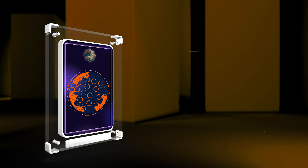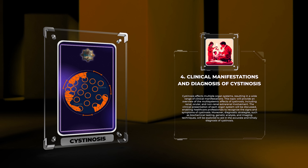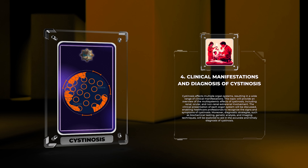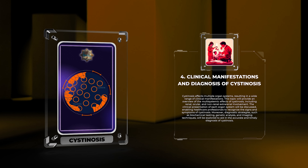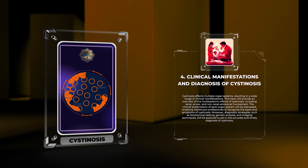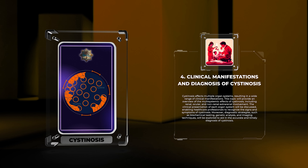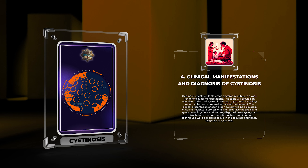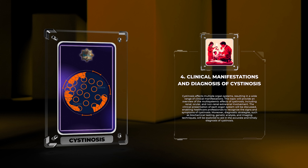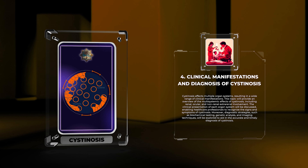Cystenosis affects multiple organ systems, resulting in a wide range of clinical manifestations. This topic will provide an overview of the multisystemic effects of Cystenosis, including renal, ocular, and non-renal extrarenal involvement. The clinical presentation of each organ system will be discussed, enabling healthcare professionals to recognize the signs and symptoms of Cystenosis. Moreover, diagnostic strategies such as biochemical testing, genetic analysis, and imaging techniques will be explored to aid in accurate and timely diagnosis.